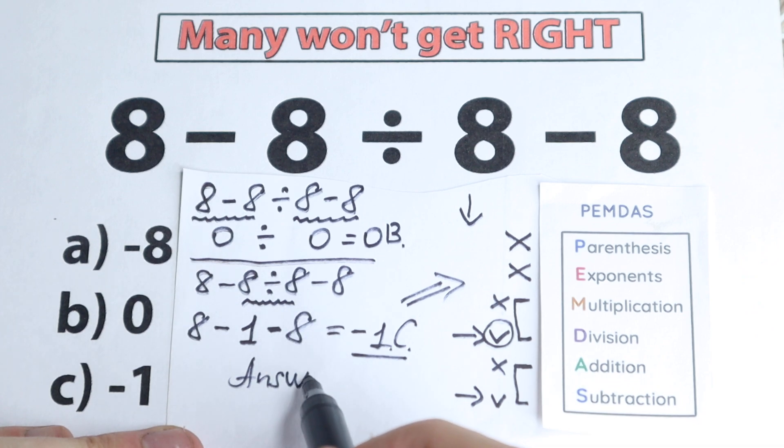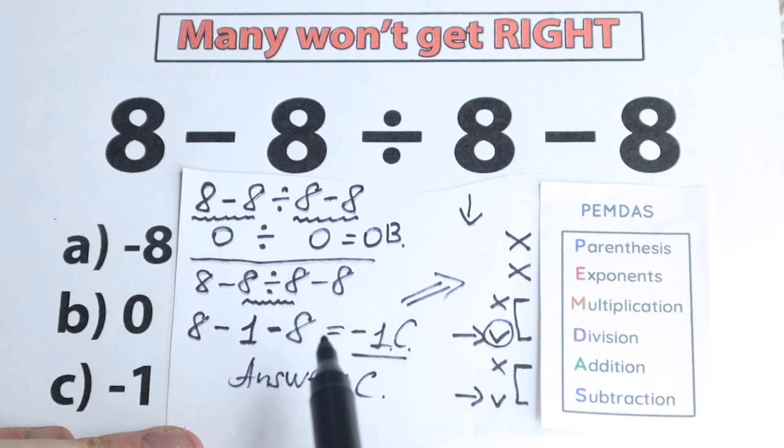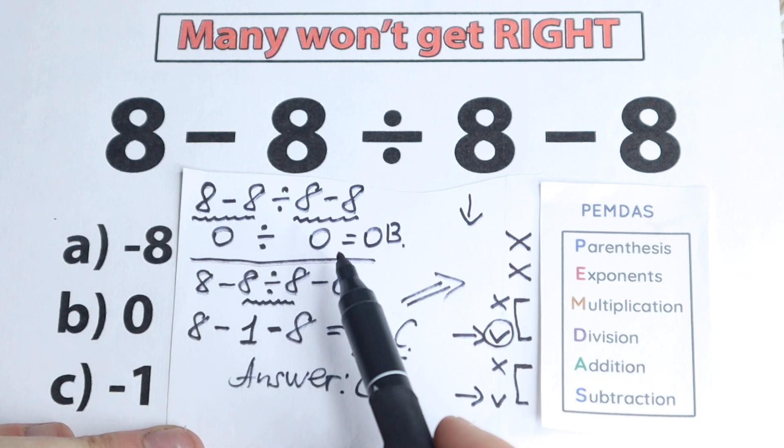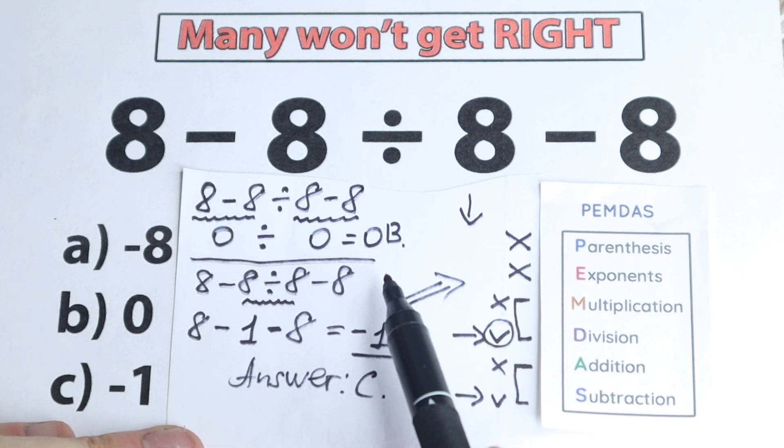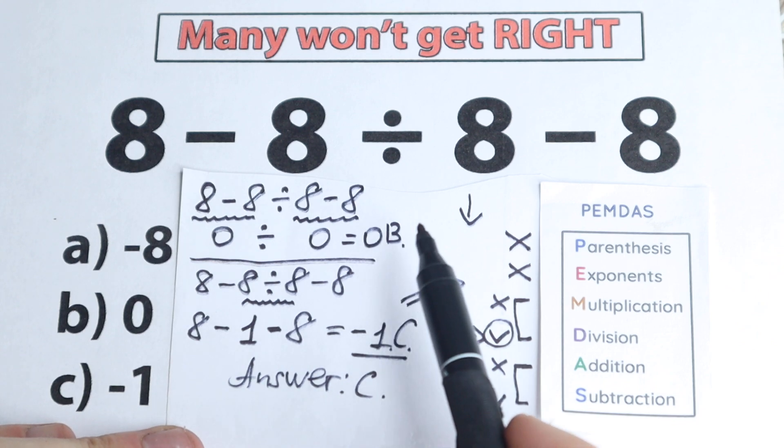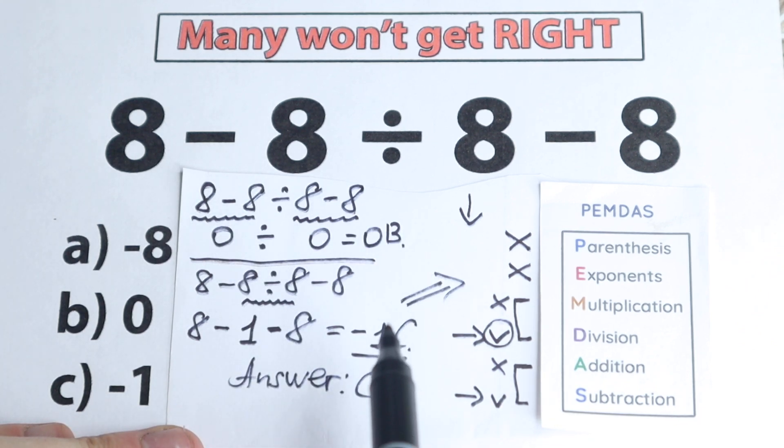But I want to go back to this wrong answer, so answer option B. But let's look closely. Zero divided by zero is undefined. But a lot of students don't know about it, and they say this is equal to zero. And moreover,